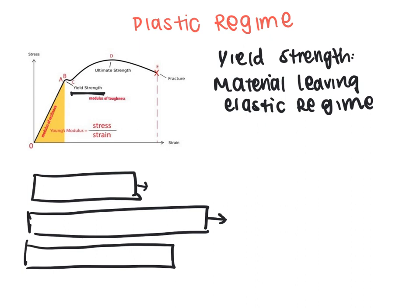Eventually, after you pull it really hard, you're going to hit something called ultimate strength. Ultimate strength is when your material starts to fail. You don't really want to reach ultimate strength most of the time, especially for buildings and things like that. If you pull it really far, you'll hit the fracture point, which is where the beam will break.